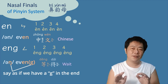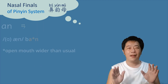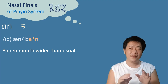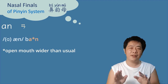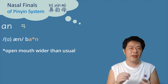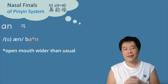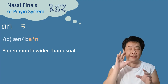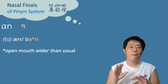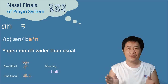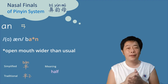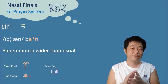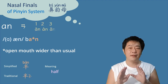安 (ān) — this sound doesn't exist in English, but it's pretty close to the 'en' in 'ben.' We only need to open our mouths wider. For beginners, open your mouth as wide as you can. Let's try: ān, ān, ān, ān. 半 (bàn) means 'half.' All four tones: ān, án, ǎn, àn.